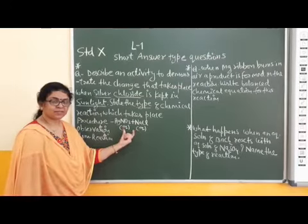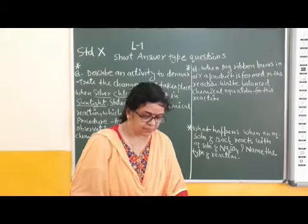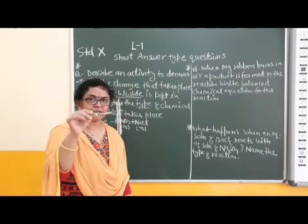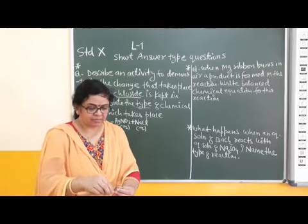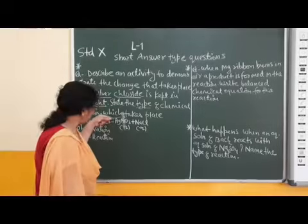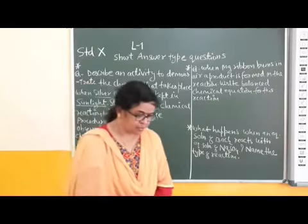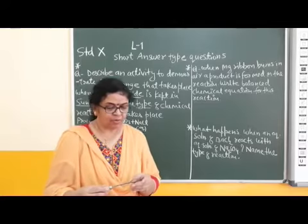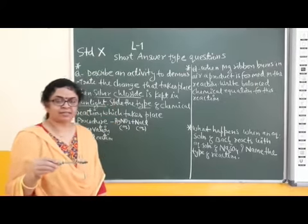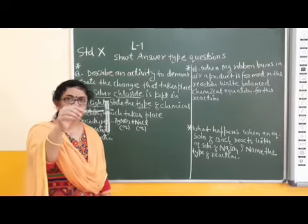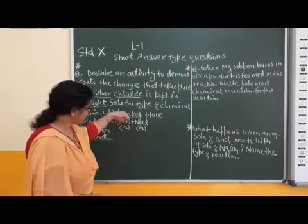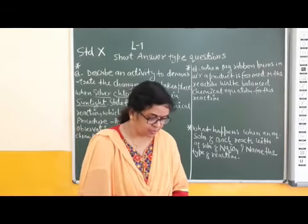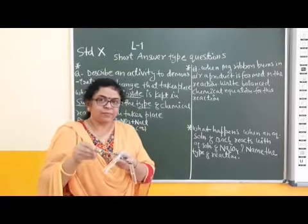Two different test tubes are required. In one test tube, take the aqueous solution of silver nitrate. What is its colour? It is a colourless solution — AgNO3 is colourless. In the second test tube, take the chloride source compound, which is the aqueous solution of sodium chloride. This second solution is also colourless.